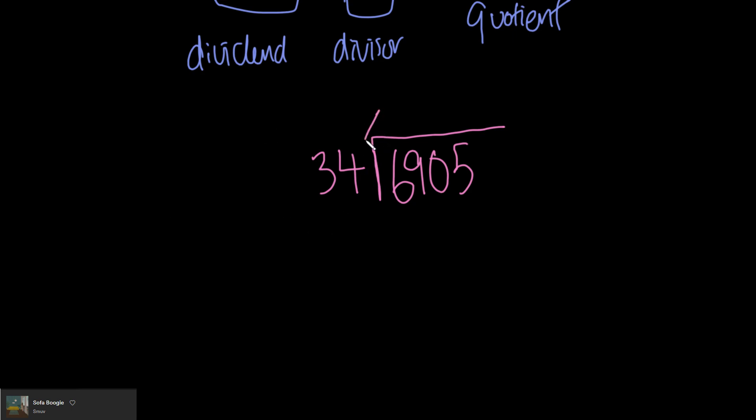So if I do 34 times 1, that's going to be 34. I'll just do some side work here. 34 times 1 is 34. 34 times 2 is, 2 times 4 is 8 here, and 2 times 3 here is 6. So 68 is probably closest to 69.